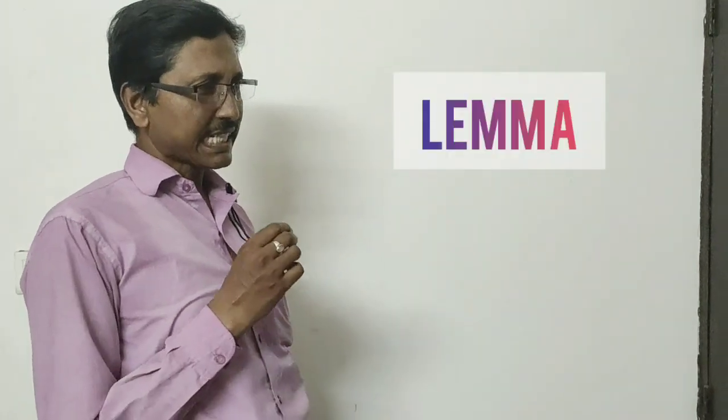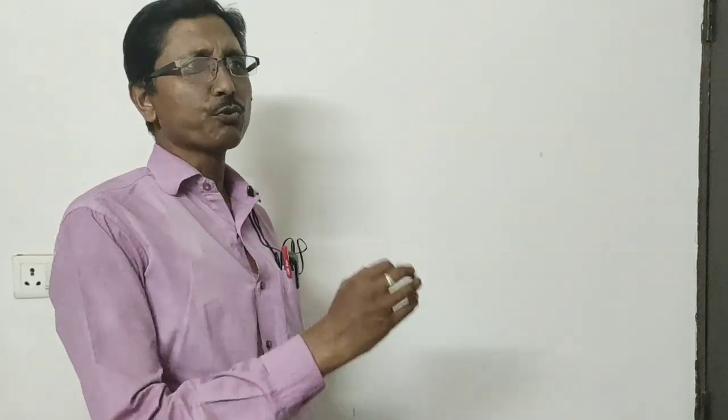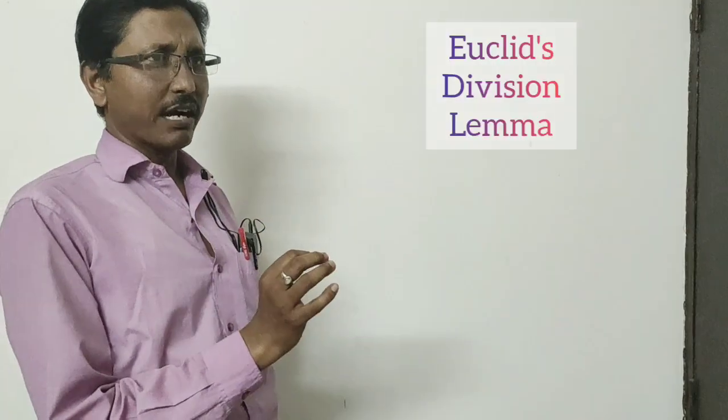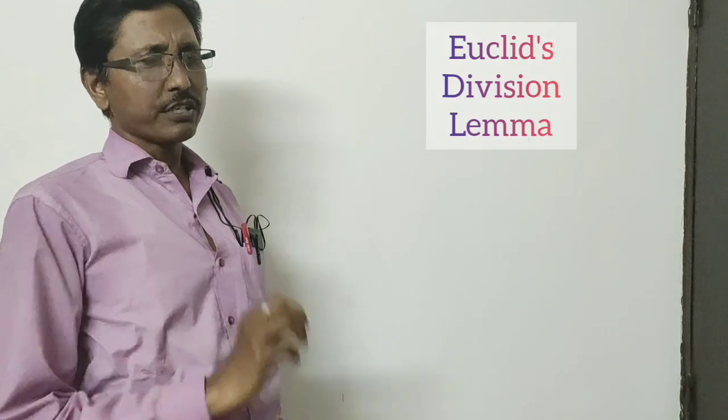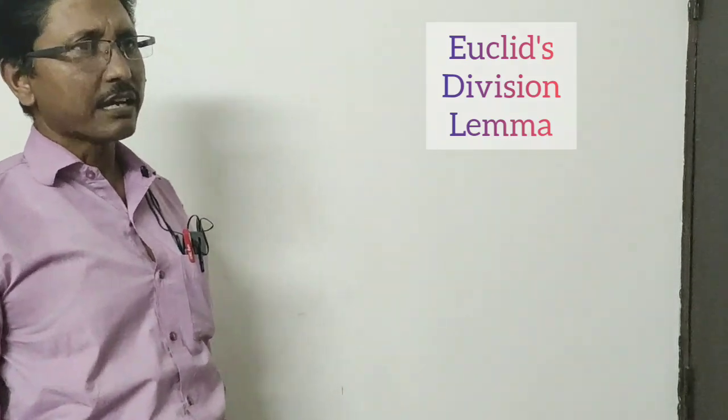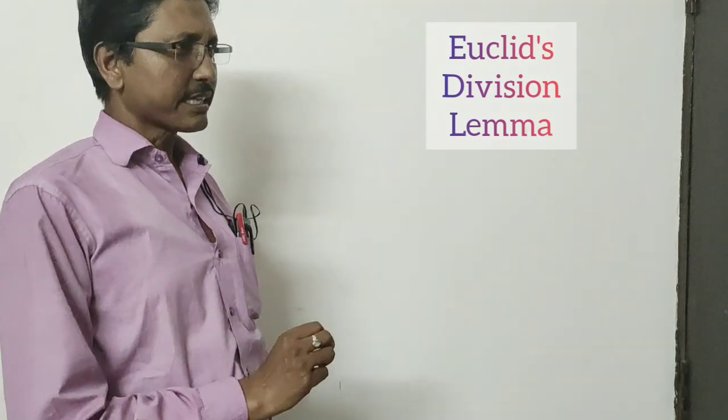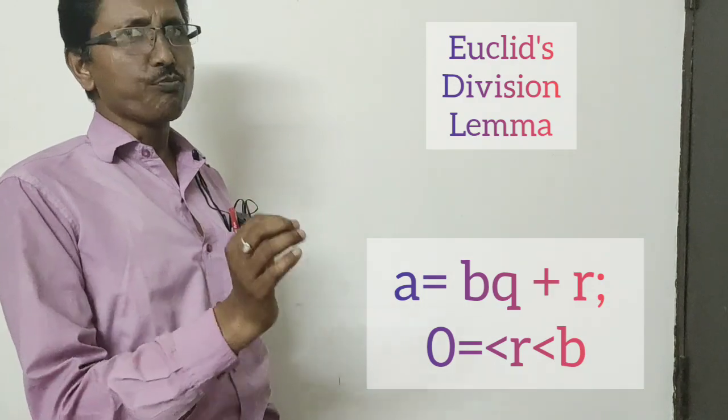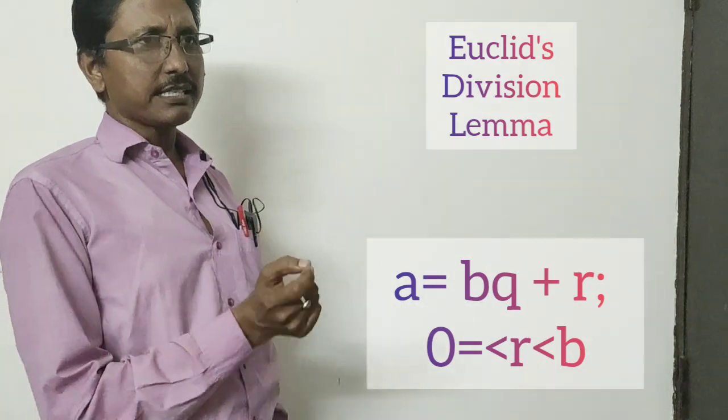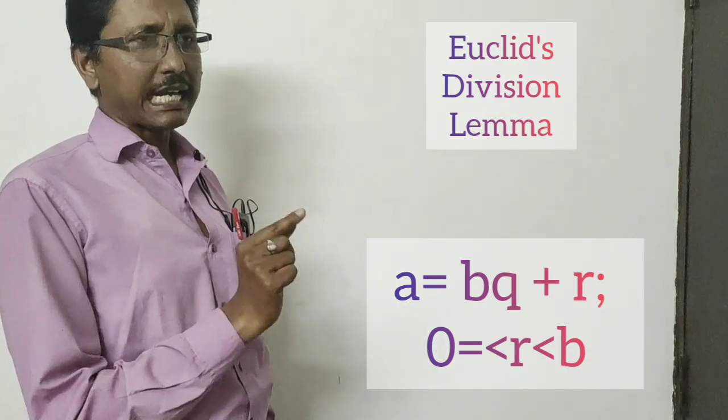One of this is Euclid's division lemma. What is lemma? Lemma is a proven statement which is used to prove some other statement. Suppose you have two positive integers A and B, and there exists unique whole numbers Q and R such that A equals BQ plus R, where R is greater than or equal to 0 and less than B.